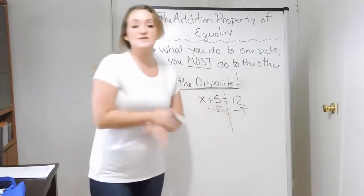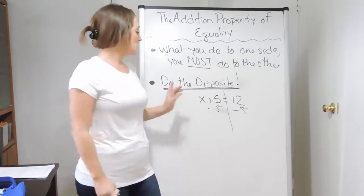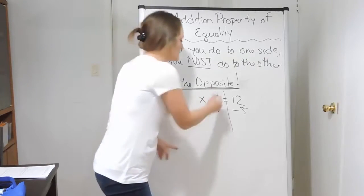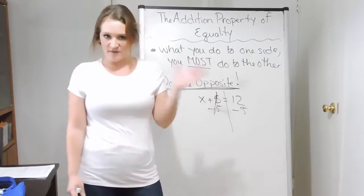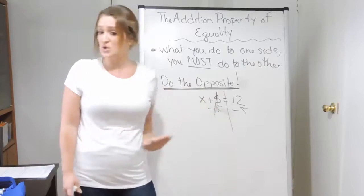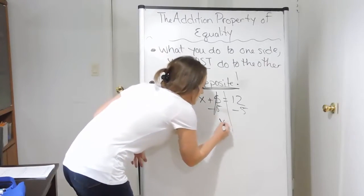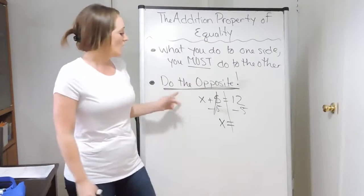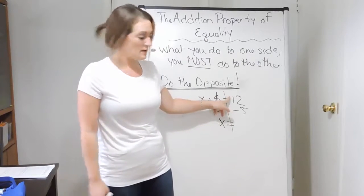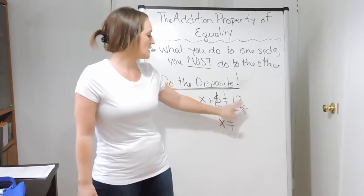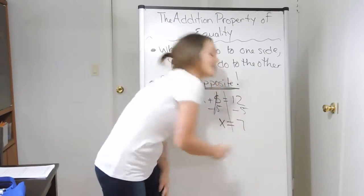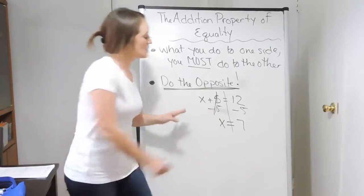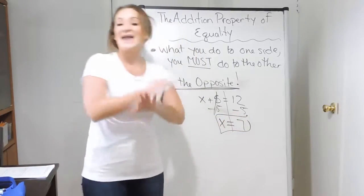After this, it's just a matter of simplifying. On the left-hand side, I had a 5 and I'm minusing a 5 — so that's going to go away because 5 minus 5 is 0. I'm going to drop down the x and simplify the right-hand side. On the right-hand side, I had a 12 and I'm subtracting 5 from it. 12 minus 5 is 7. And x is already by itself — that was a one-step problem.